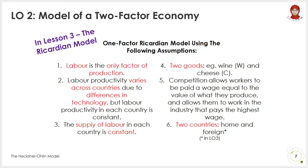Previously in lesson 3, the Ricardian model, we discussed the one-factor economy with only labour to produce either wine or cheese. Now we will illustrate the model of a two-factor economy based on the assumptions of the Heckscher-Ohlin model. However, to keep things simple, we model a single additional factor — that is capital — which is used in conjunction with labour to produce either clothes or food. Hence, it is called a two-factor economy.